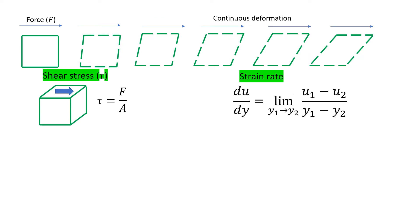Shear stress is used for the external stimulus, which is defined as shear force divided by contacting area. Strain rate is used to describe the continuous deformation; it's du over dy.